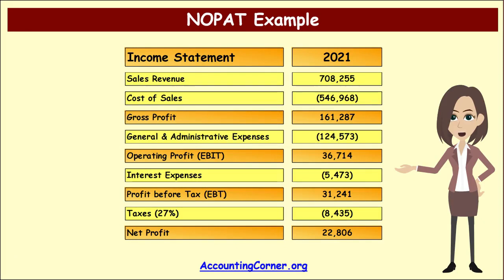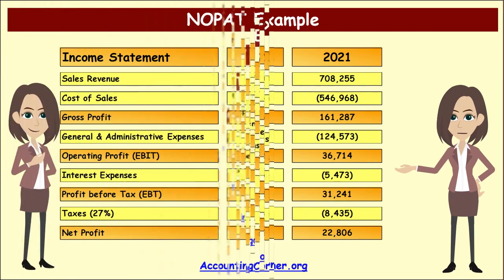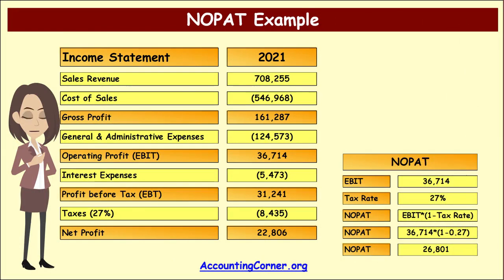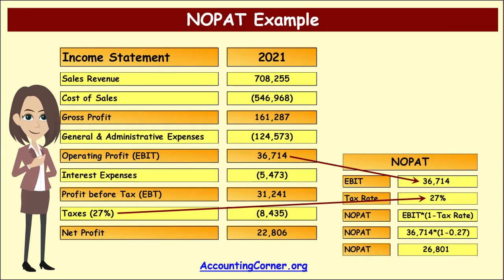Let's explore a NOPAT calculation example. Here you can see an income statement of the company for the year 2021. There is no NOPAT amount in the income statement — it has to be calculated. We take operating profit, or EBIT, from the income statement, which is equal to 36,714. We take the tax rate percentage, which is 27%. Multiplying EBIT by the difference between 1 and the tax rate, we get net operating profit after tax, which is equal to 26,801.